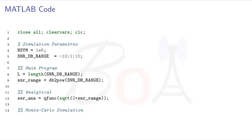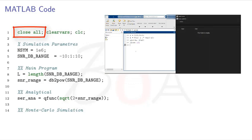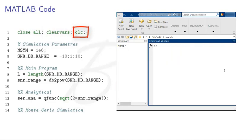Now, let us start with the MATLAB code. The first line in this code is close all, clear vars, and clc. These are three different commands. The first command close all closes all the open figures by MATLAB. Clear vars clears all the variables which are present in the MATLAB workspace and clc clears the MATLAB console.